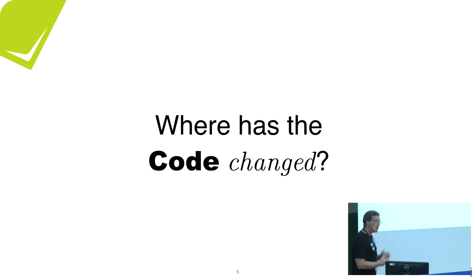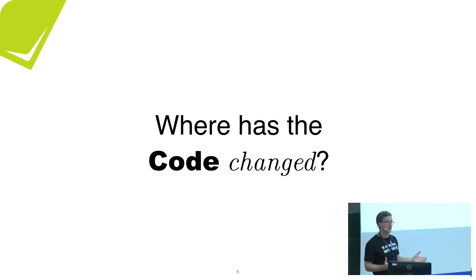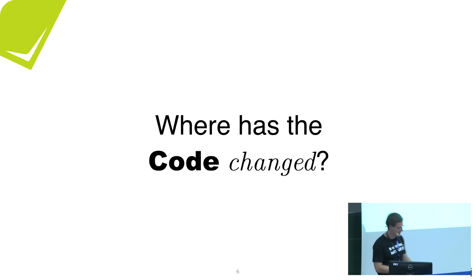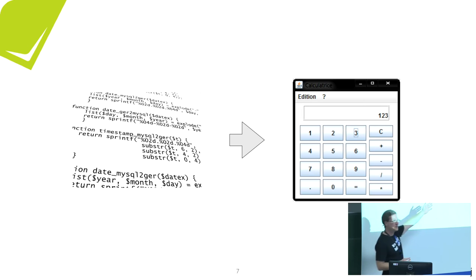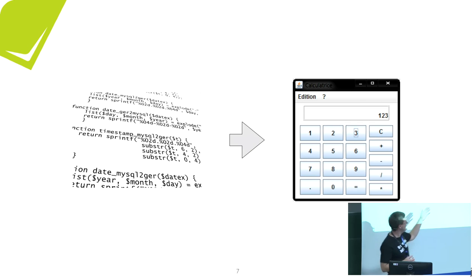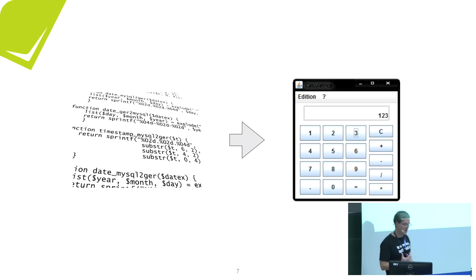When you use version control like Git, it tells you where the code has changed — here's your test automation, here's your configuration. But unfortunately there's more to software than code, because software consists of dynamic runtime information — this is what your users see. You need data, a runtime system, much more than just code. And this is not version-controlled by Git. There's a gap there.